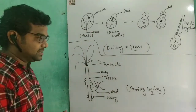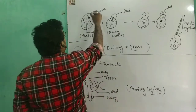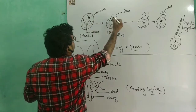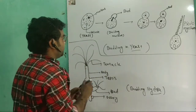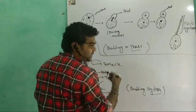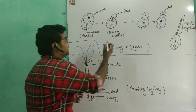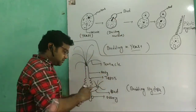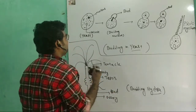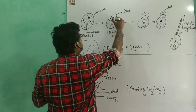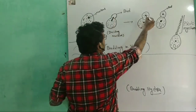In yeast, a bud is produced at one side of the cell. The nucleus undergoes mitotic division and is converted into two nuclei. Mitosis cell division is involved. The nucleus is divided into two, and one nucleus enters into the bud.